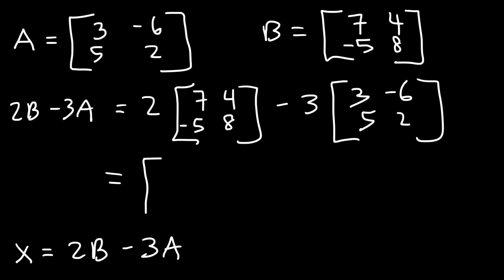So 2 times 7 is 14, then 2 times 4 is 8, 2 times -5, that's -10, 2 times 8 is 16. So basically, we simply need to double everything in that matrix.